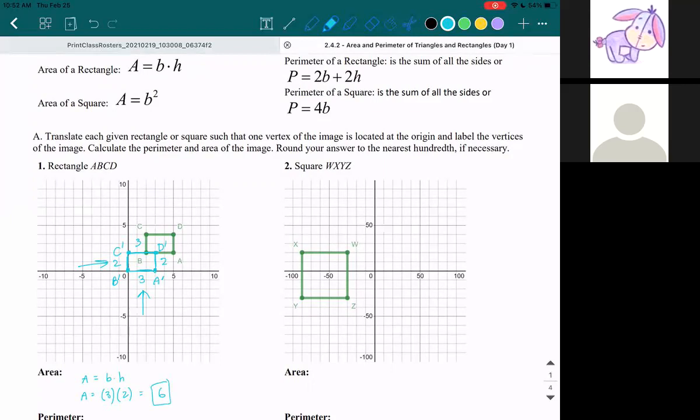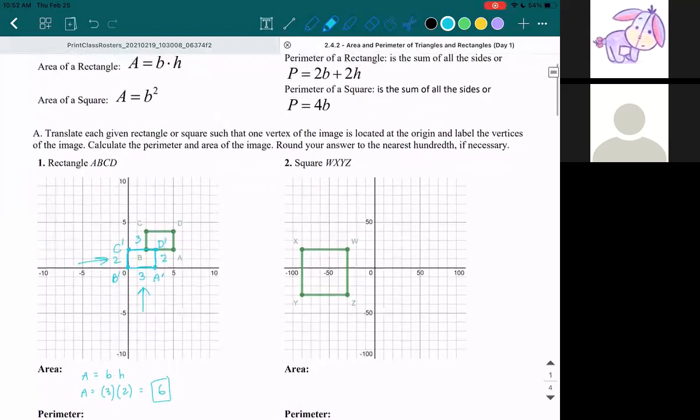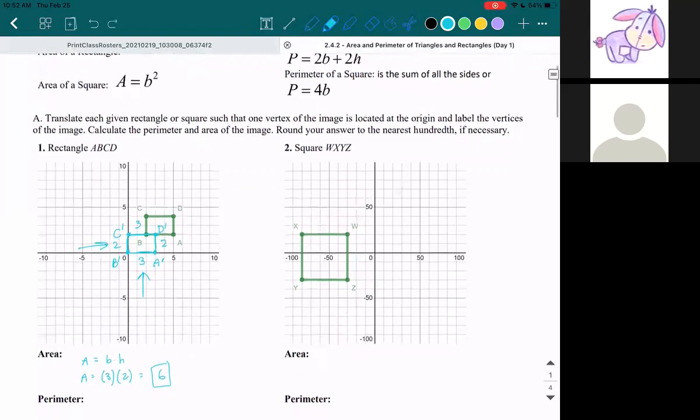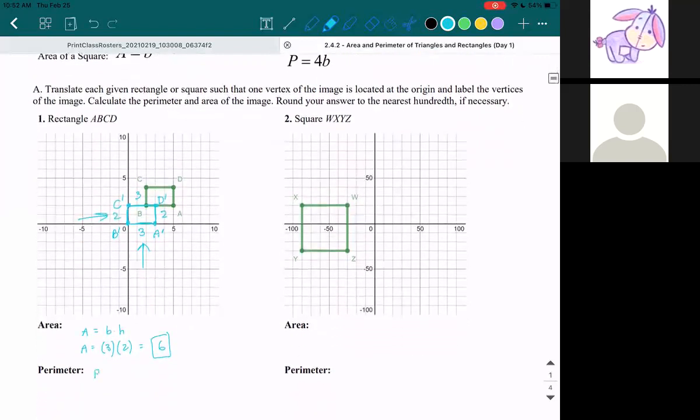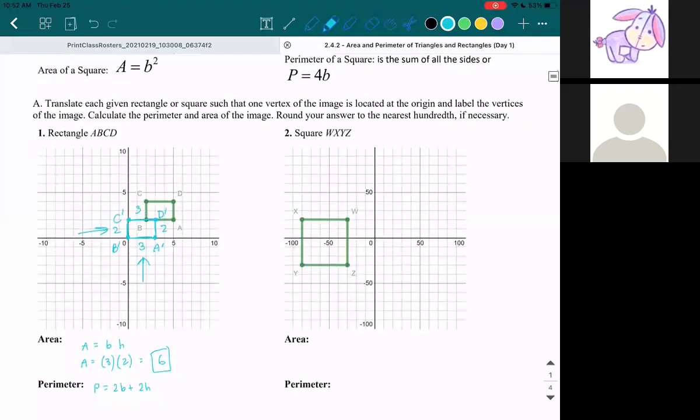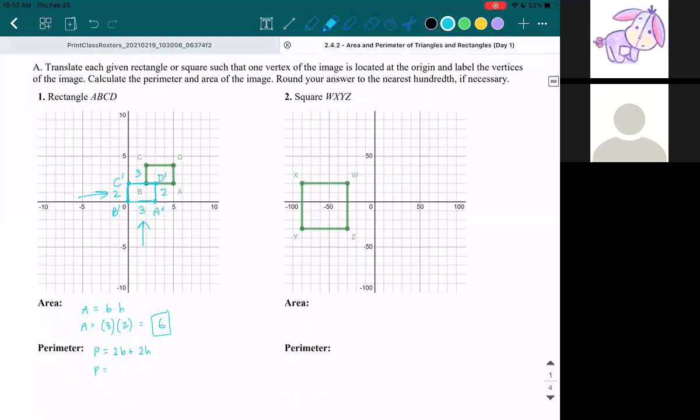And then when we're calculating the perimeter, perimeter of a rectangle is two base plus two height. Notice I am using the formulas for rectangles because this is a rectangle, because two and three are different lengths. So 2b plus 2h. So 2 times the base, remember base is 3, plus 2 times the height, remember the height is 2.